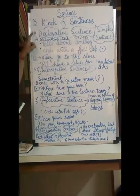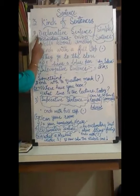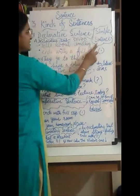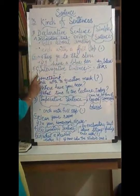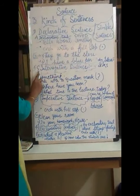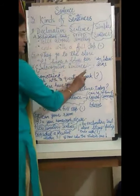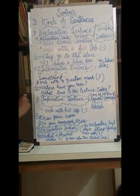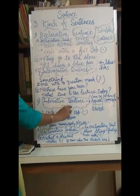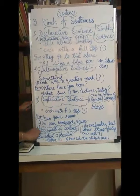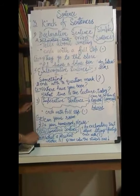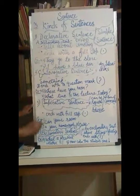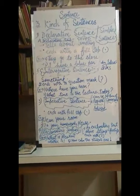To recap, the four kinds of sentences are: first, the declarative or simple sentence; second, the interrogative or question sentence, always ending with a question mark; third, the imperative sentence; and fourth, the exclamatory sentence. I hope all four are clear to you.